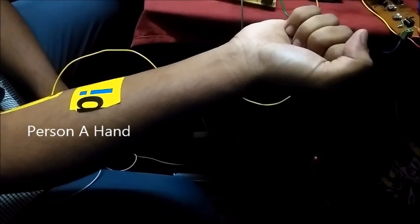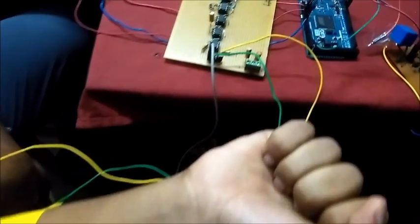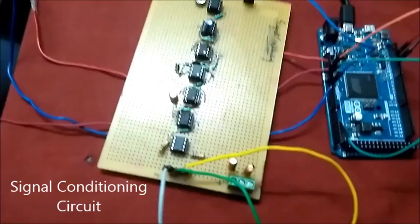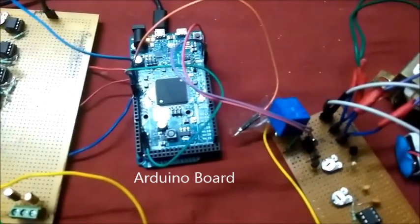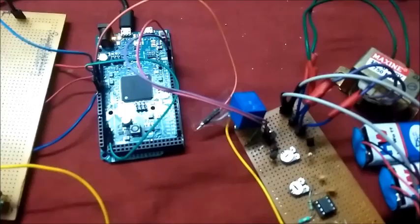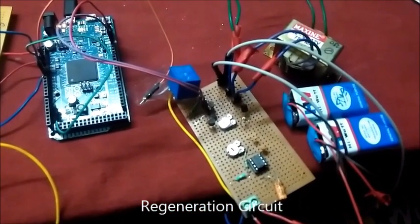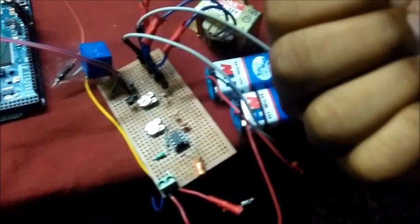The electromyogram signal from person A is transferred to the signal conditioning circuit to get conditioned. After that, the signal is passed to the data acquisition unit where its value is compared to the threshold value of 500 V. If it is greater than 500 V, the signal regenerating unit is activated and the electromyogram signal is transferred to person B.